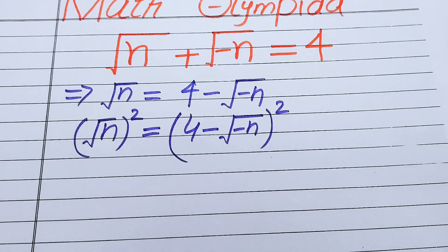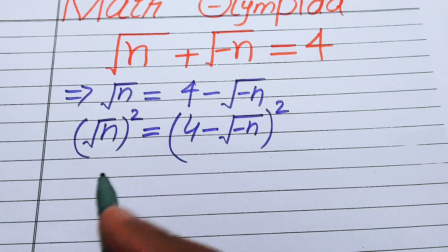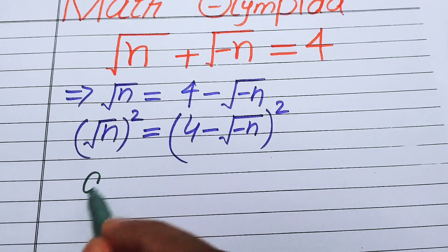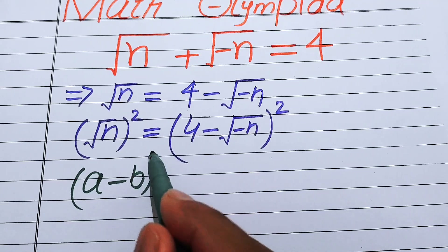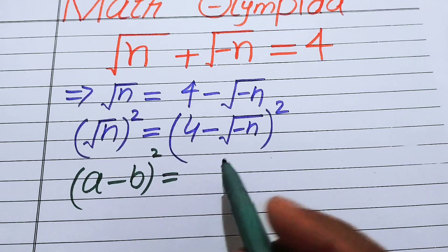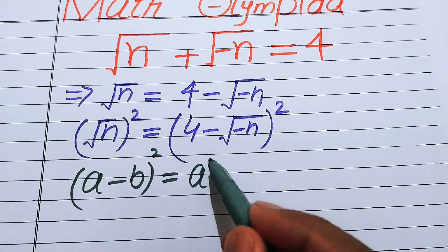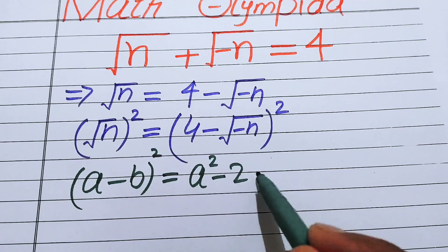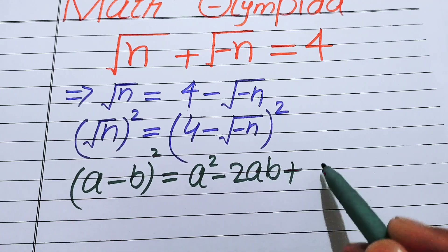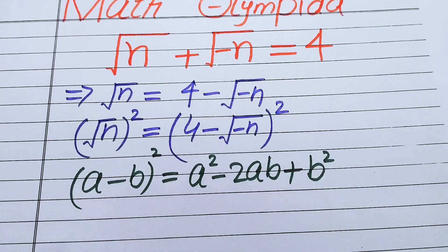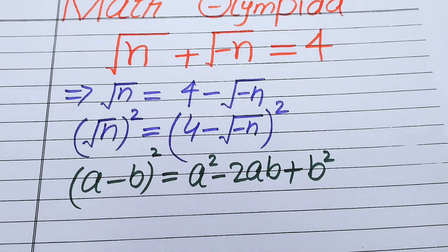After this step we will use the nice square identity. You know this identity: if we have (a minus b) whole square, it equals a squared minus 2ab plus b squared. We will now use this identity to expand the right hand side.